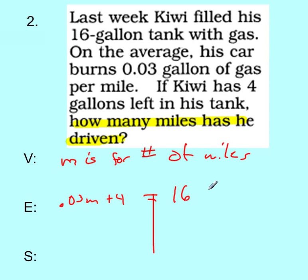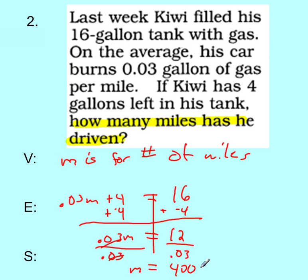So there's our expression. Now, to solve our expression, we're going to add negative 4 to both sides. And what we end up with is 0.03M is equal to 12. Now we're going to divide by 0.03. Divide by 0.03. And we're going to get M is equal to 12 divided by 0.03, which is 400 miles.